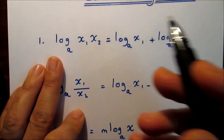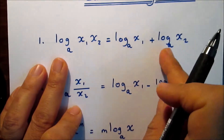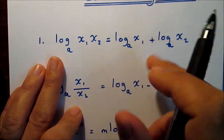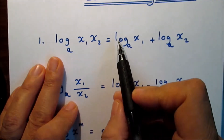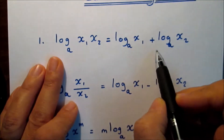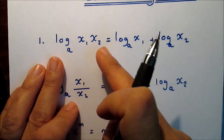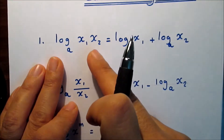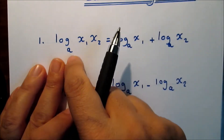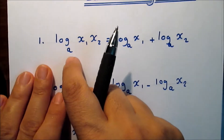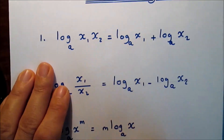The first law: multiplication inside the log can be turned into addition outside the log. So log base a of x1 times x2 equals log base a of x1 plus log base a of x2. Here x1 and x2 cannot be negative and cannot be zero, and a cannot be negative, cannot be zero, and cannot be equal to one.